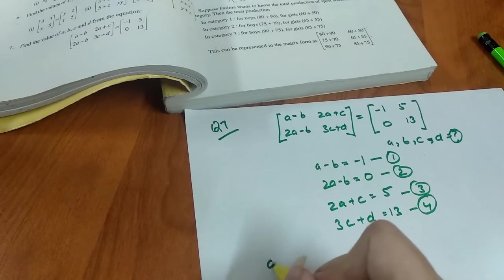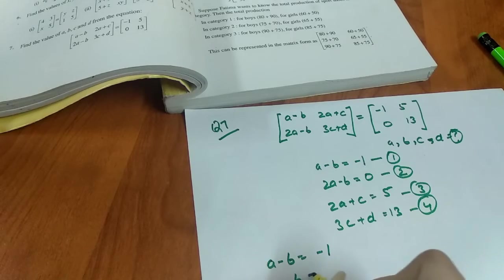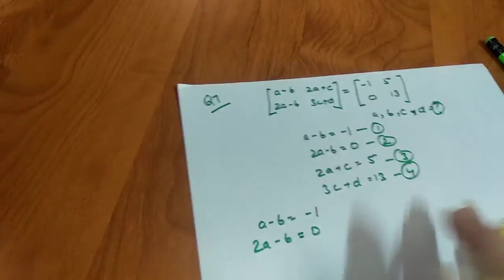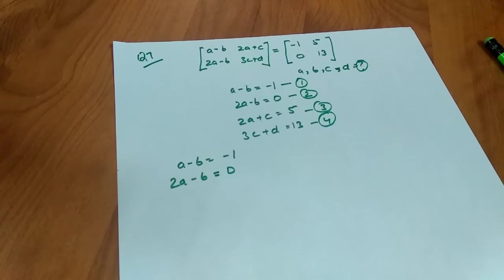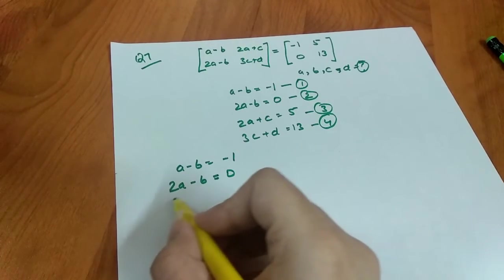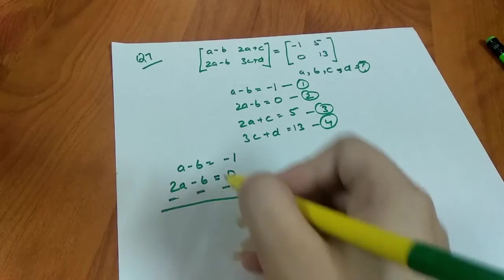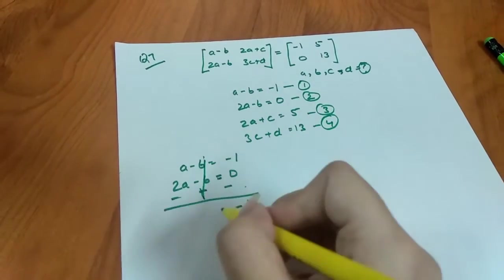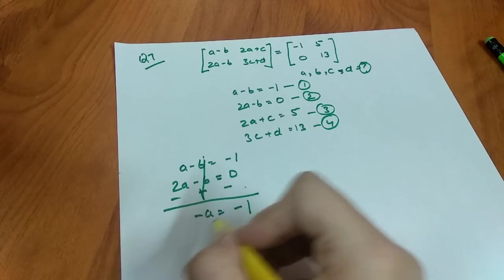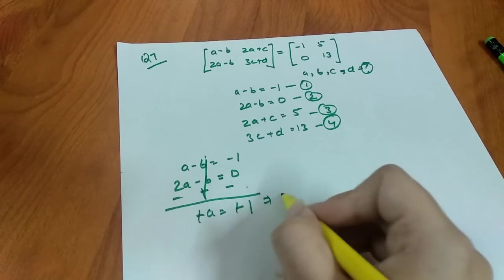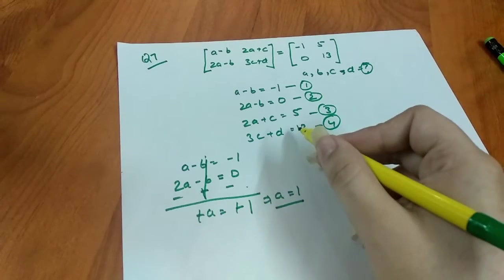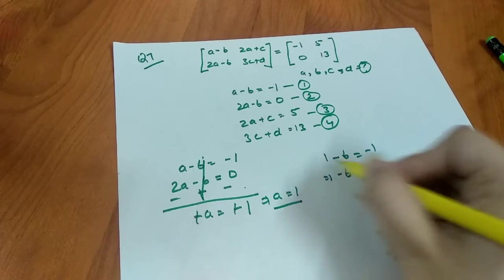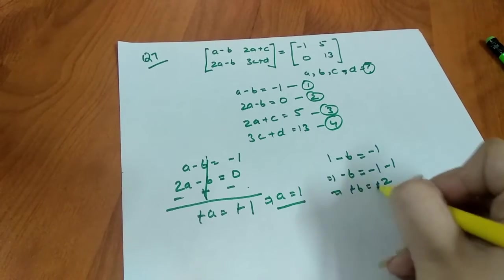We have a minus b equals -1 and 2a minus b equals 0. We subtract the first equation from the second: b and b cancel out, and 2a minus a gives a equals 1. Substituting a equals 1 into the first equation: 1 minus b equals -1, so minus b equals -2, therefore b equals 2.